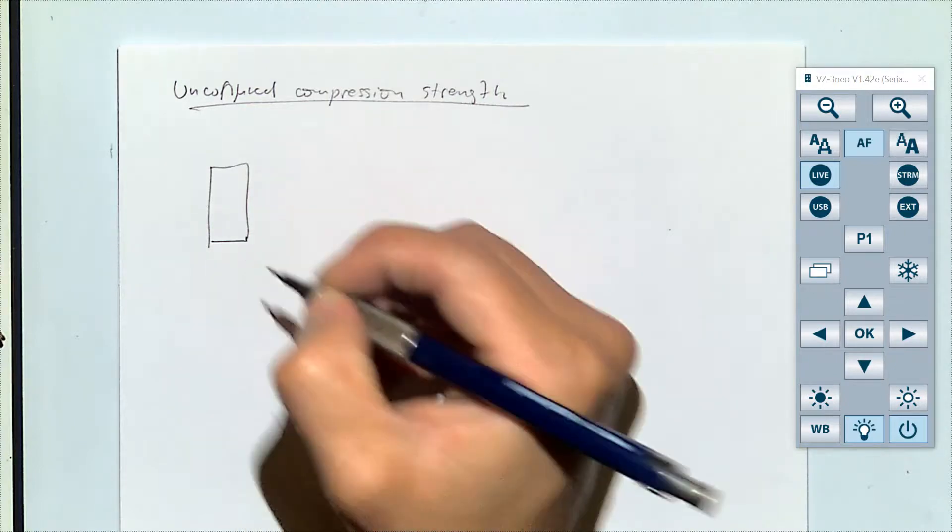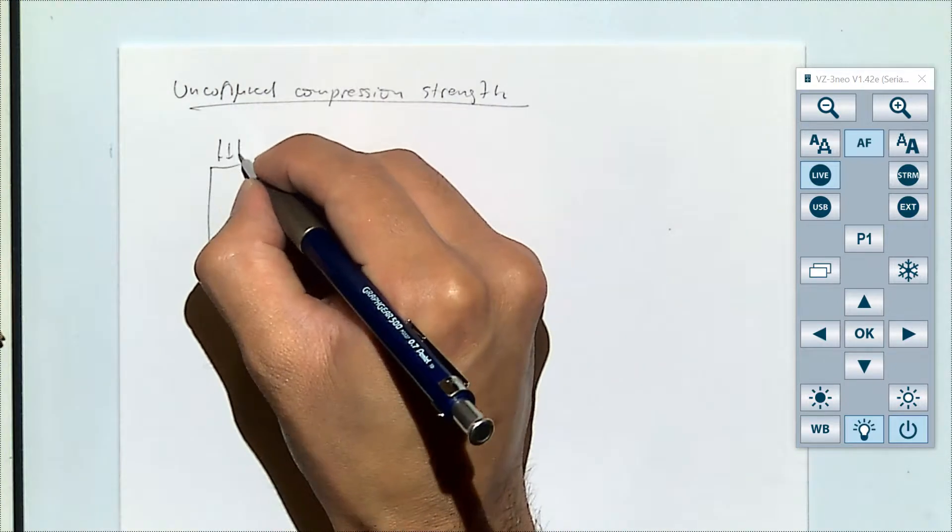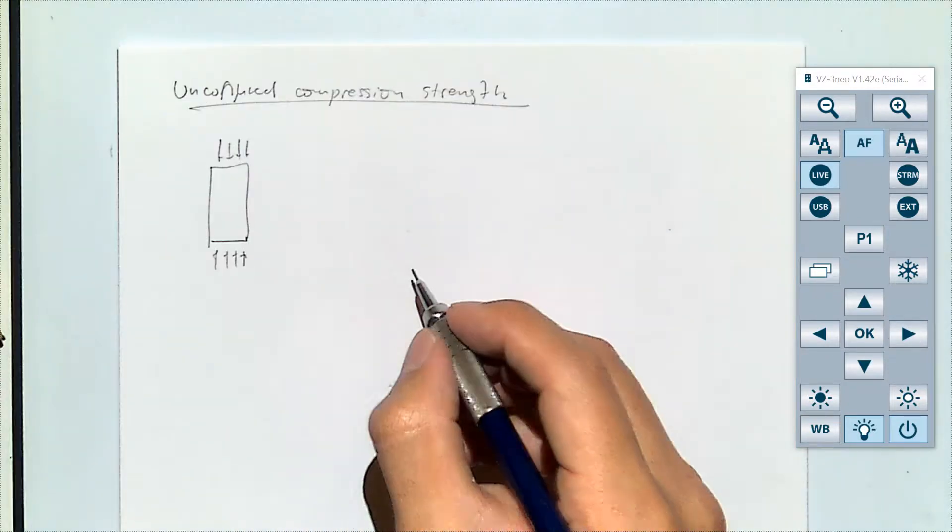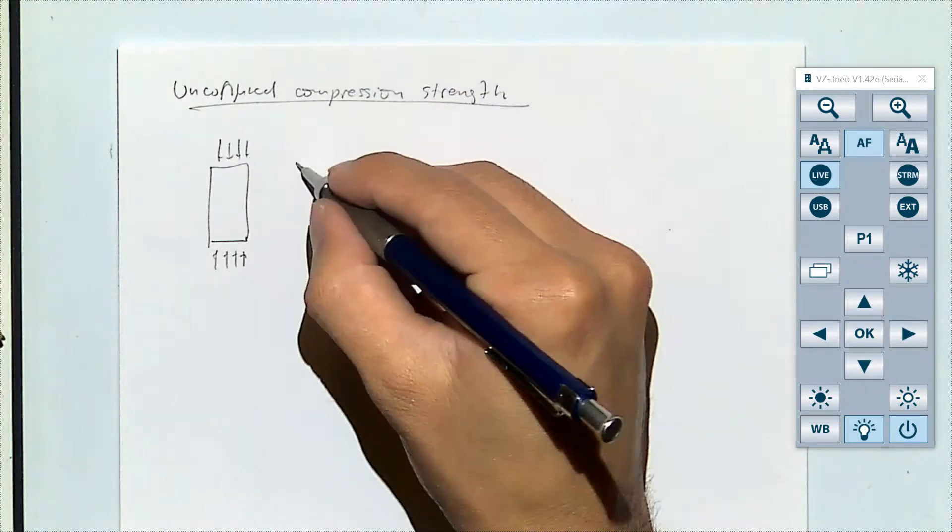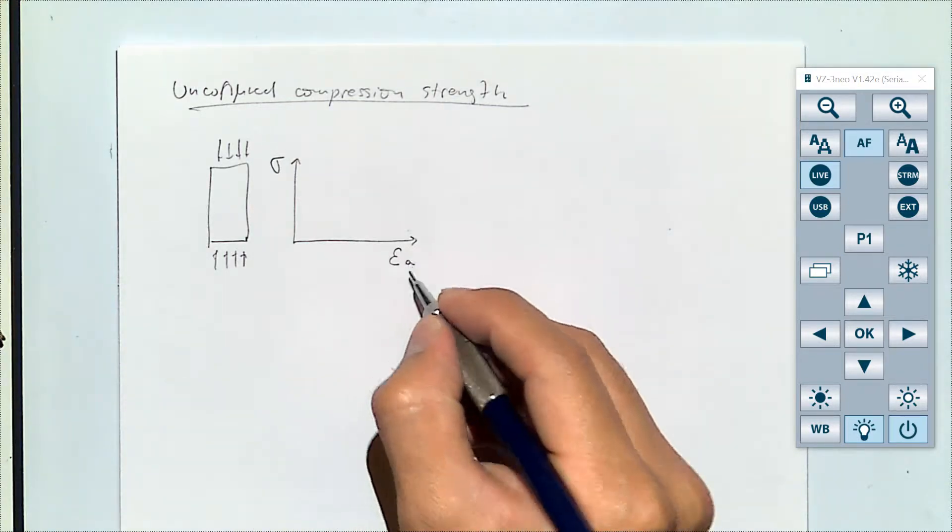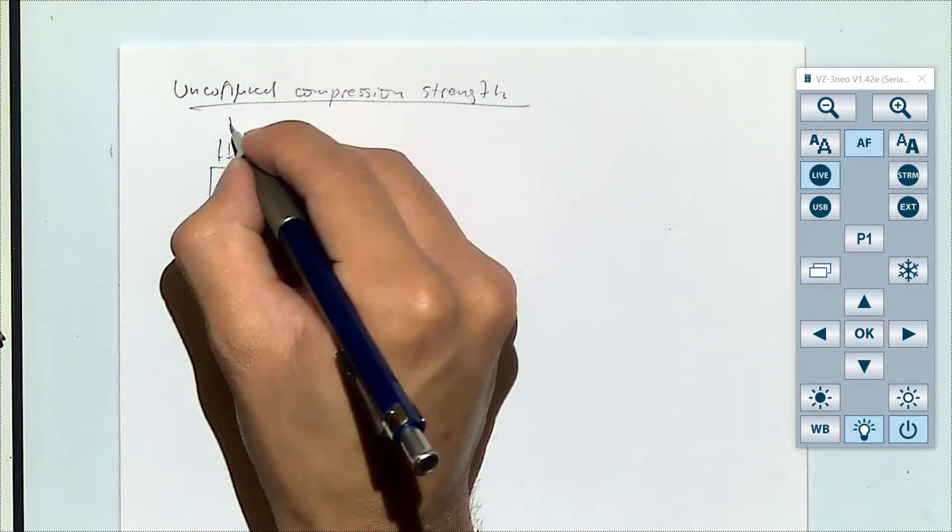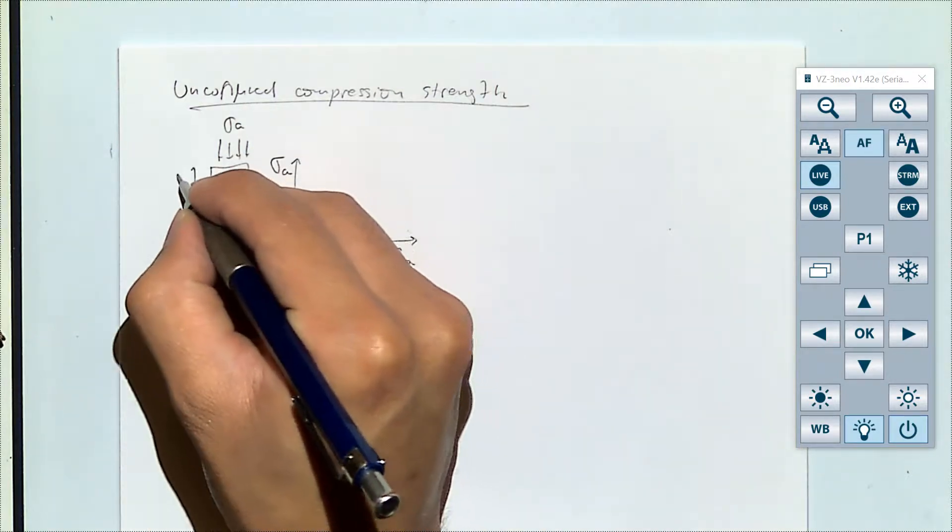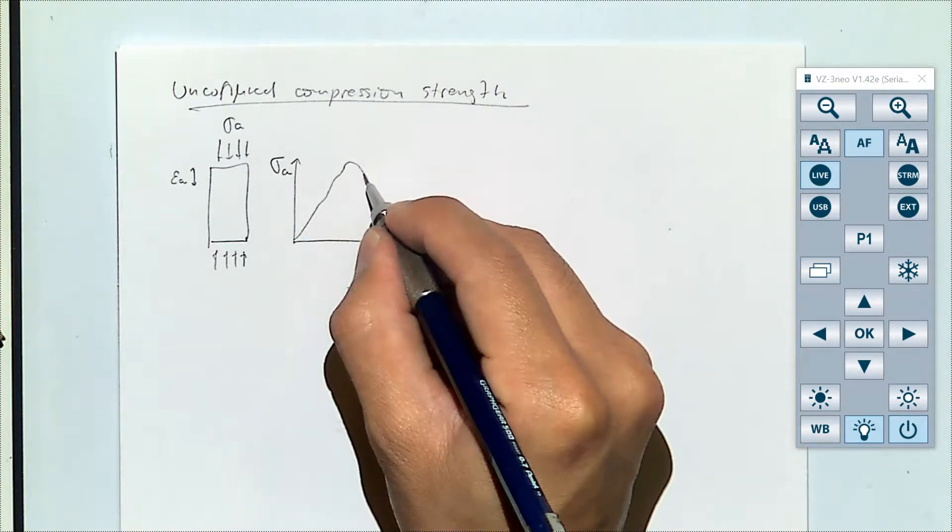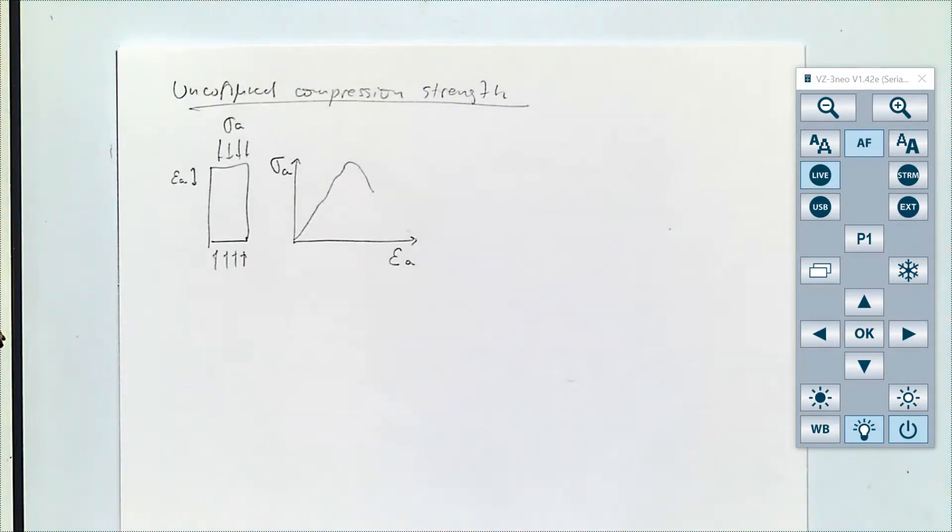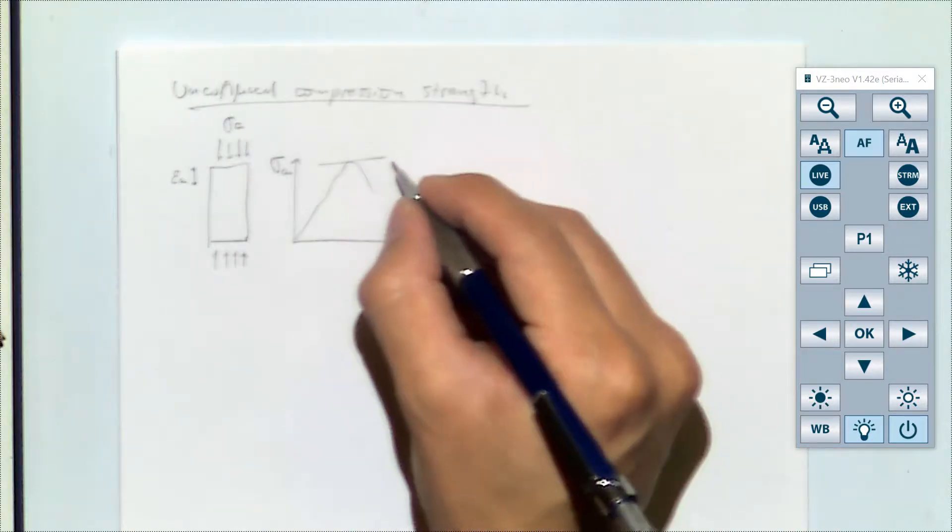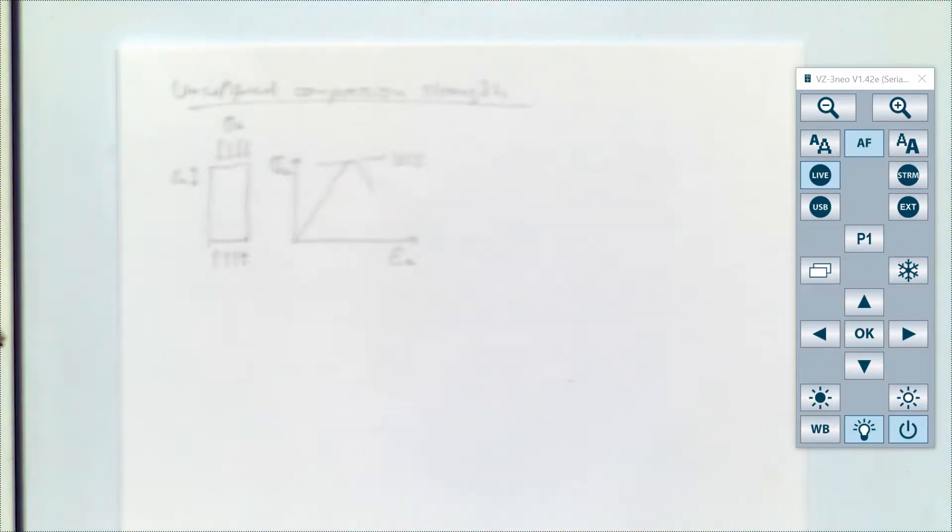Basically you get the rock sample subjected to axial stress with no confining from the sides. You can measure stress as a function of strain in the axial direction and this will give you something like this, where the maximum stress is what we call unconfined compression strength.